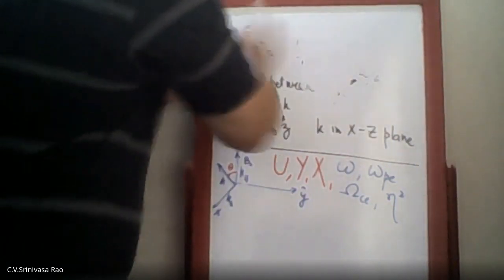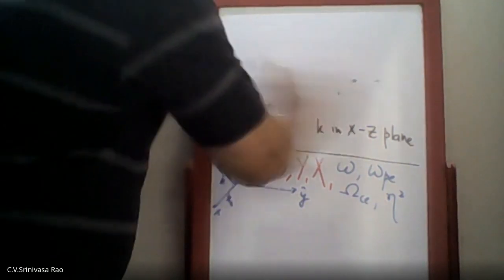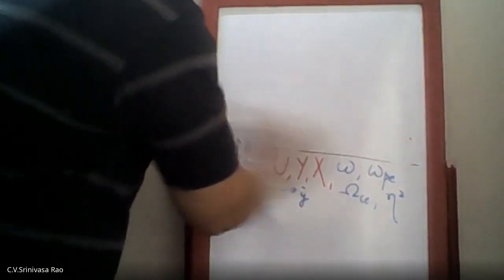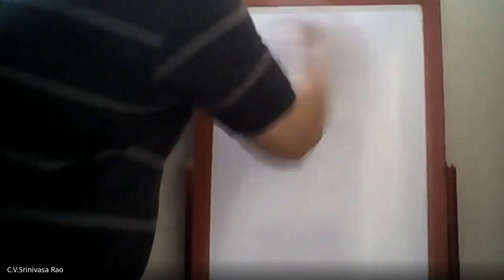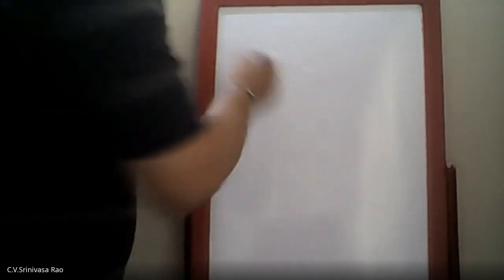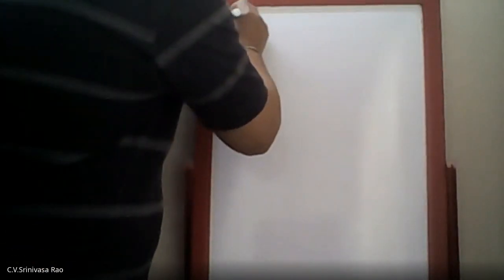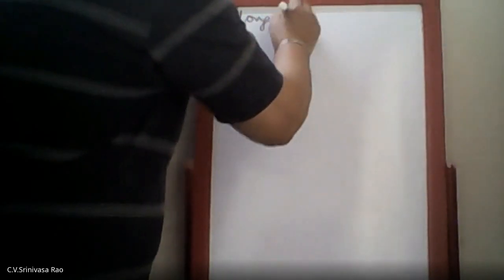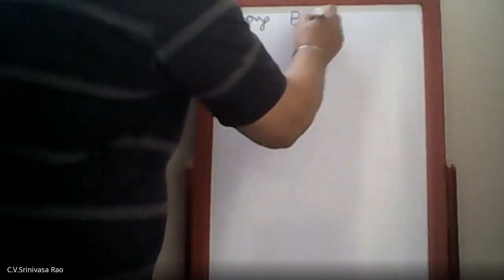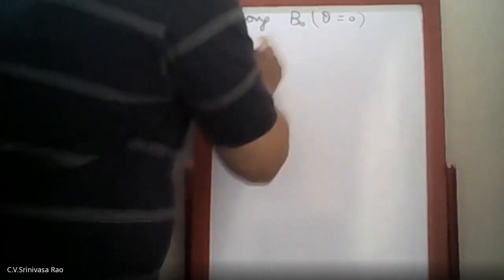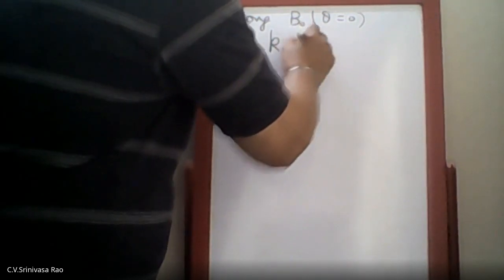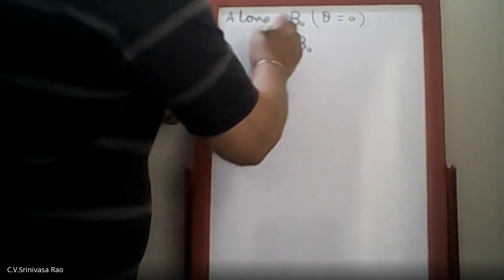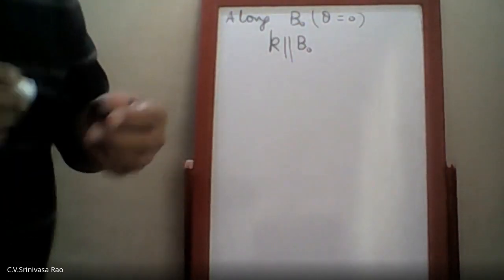We use the same cold plasma and linear theory — all those things remain the same. Now we will see what is the wave propagation along B, which means theta is zero. So k is parallel to the magnetic field.